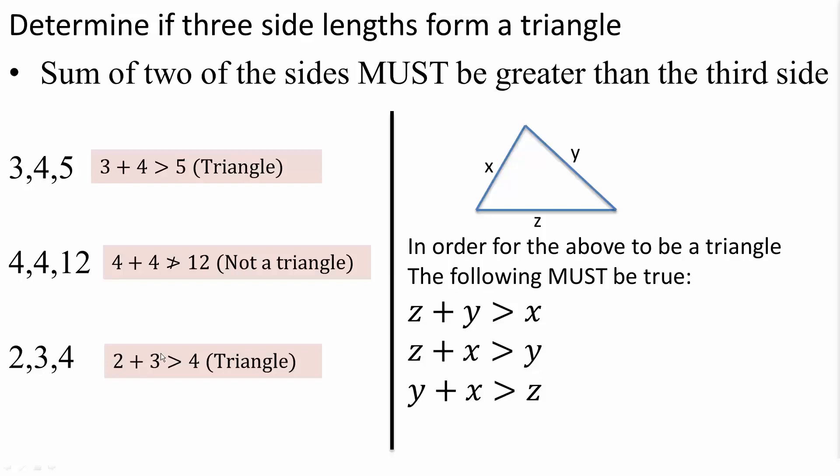2, 3, 4. 2 plus 3 is 5, 5 is greater than 4, so it will form a triangle.